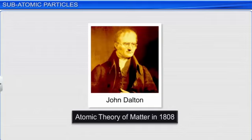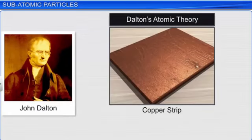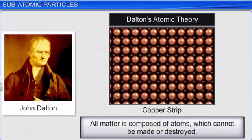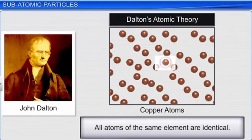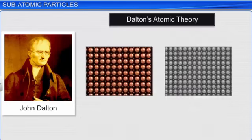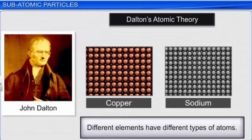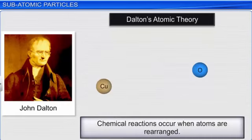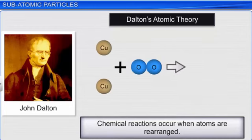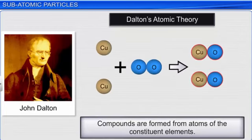Dalton proposed that atom is the ultimate particle of matter. This theory is called Dalton's atomic theory. It postulates that all matter is composed of atoms that cannot be made or destroyed. All atoms of the same element are identical. Different elements have different types of atoms. Chemical reactions occur when atoms are rearranged.